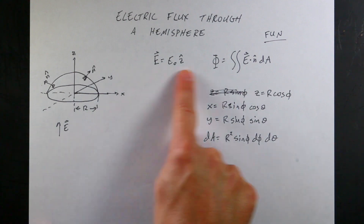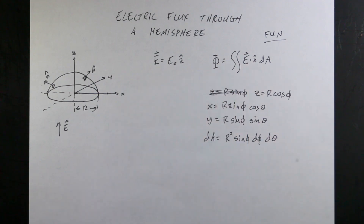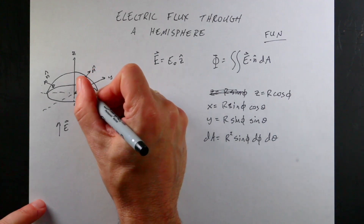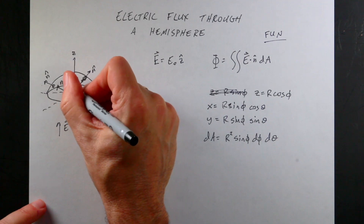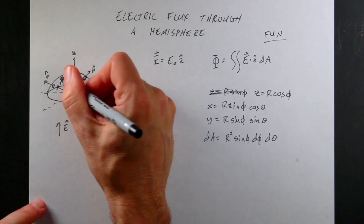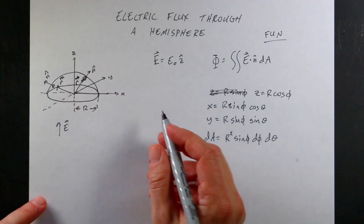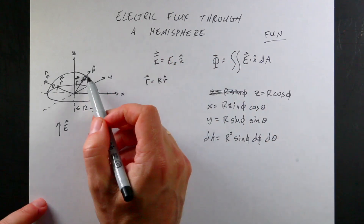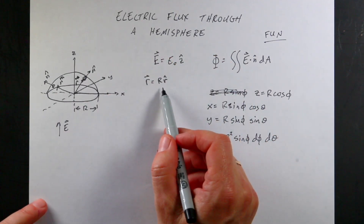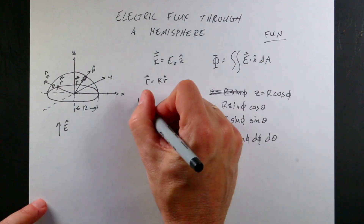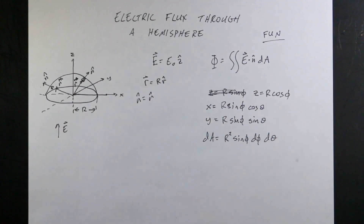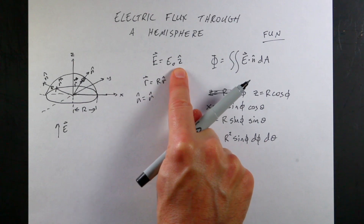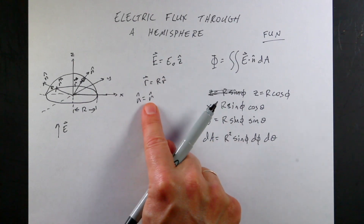I have E. I need to get n-hat. In spherical coordinates, that's not too bad, because if I have the vector r for each of these pieces, the vector r is just going to be r r-hat. And n-hat is in the same direction as that, so n-hat is just going to be r-hat. So n-hat equals r-hat because my sphere is centered on the origin.